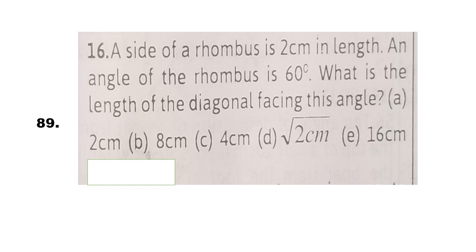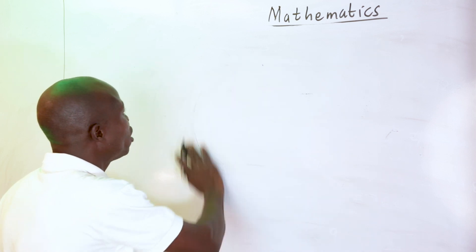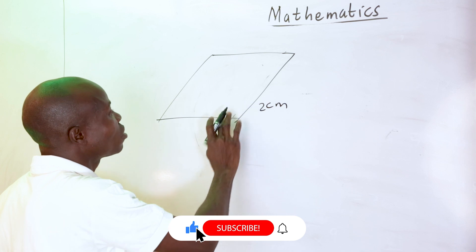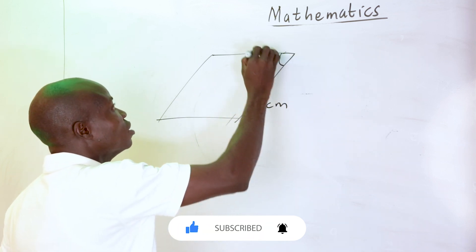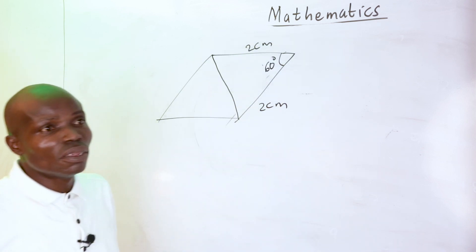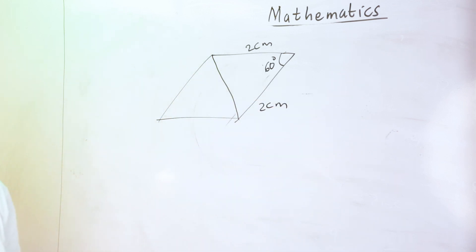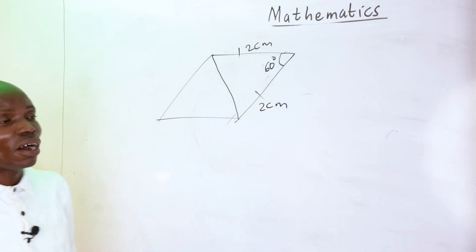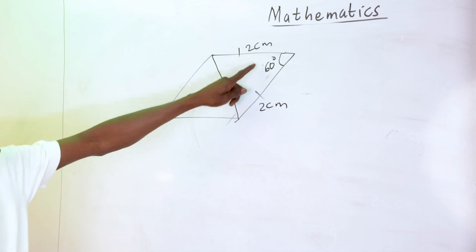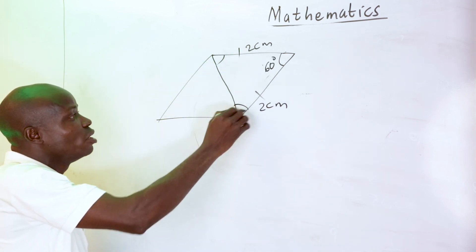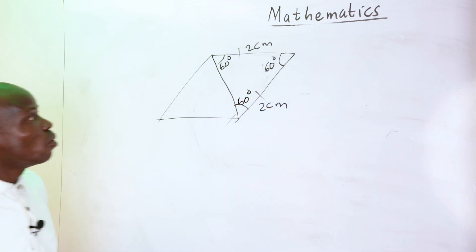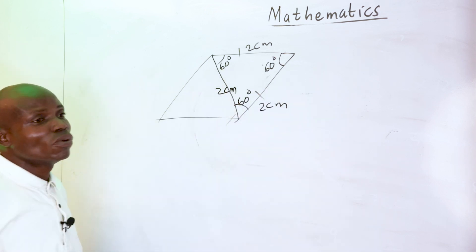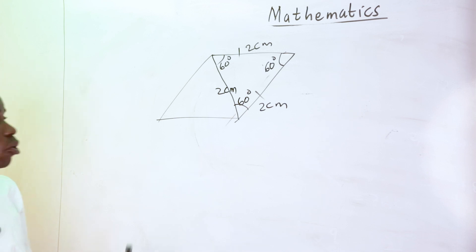Number 89: a rhombus has side 2 cm and one angle of 60 degrees. The diagonal facing the 60-degree angle creates a triangle with base angles of 60 degrees each, forming an equilateral triangle. Therefore the diagonal length equals 2 cm. The correct option is A.